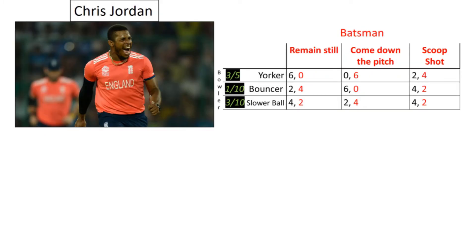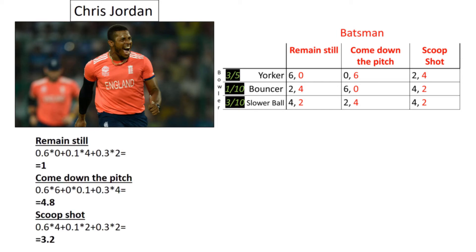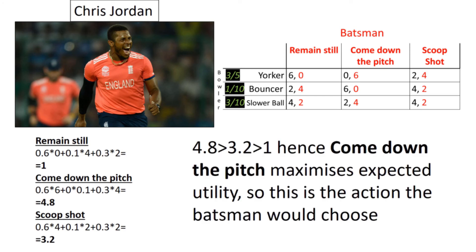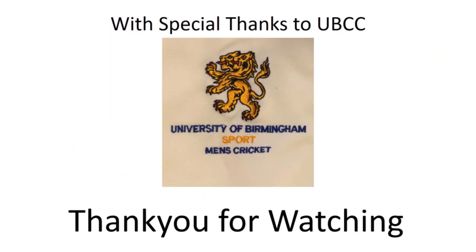One famous professional bowler is Chris Jordan. He is renowned for his Yorkers and slower balls, however he bowls bouncers less frequently. On screen is my estimation of the probability of him bowling each. A batsman can use this information to calculate the expected payoff of each action, which I have done for this scenario. The results show that when batting against Chris Jordan, the optimal action is to come down the pitch as this maximises expected utility. I hope you've enjoyed this application of game theory in the context of cricket. Thank you very much for watching.